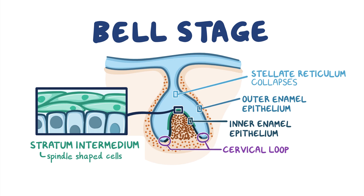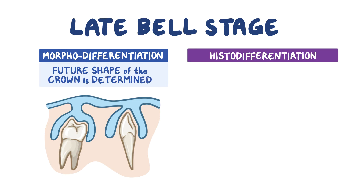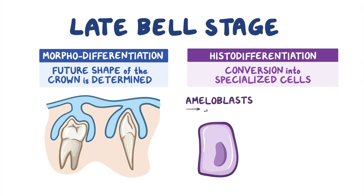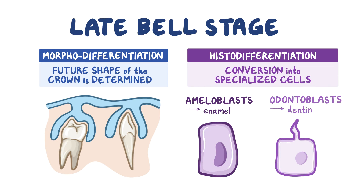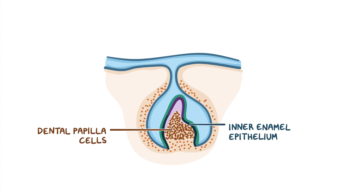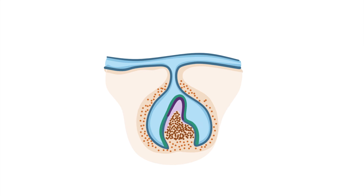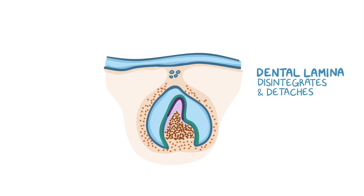The tooth germ epithelium then forms the bell-shaped structure that will become the crown of the tooth. The late bell stage is when morphodifferentiation occurs, determining the future shape of the crown — incisive, canine, premolar, or molar — and it also marks an important stage of histodifferentiation. Histodifferentiation is the conversion of cells of the dental organ into specialized cells, such as ameloblasts which produce enamel and odontoblasts which produce dentin. Following cusp formation, the inner enamel epithelial cells and the dental papilla cells continue differentiating into ameloblasts and odontoblasts respectively, down the slope of the cusp and up to the cervical loop. As ameloblasts and odontoblasts continue to secrete the mineralized matrix, the dental lamina will disintegrate, completely detaching the tooth germ from the oral epithelium.